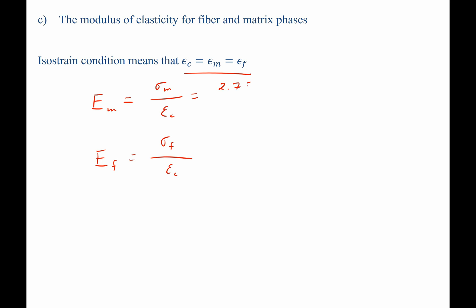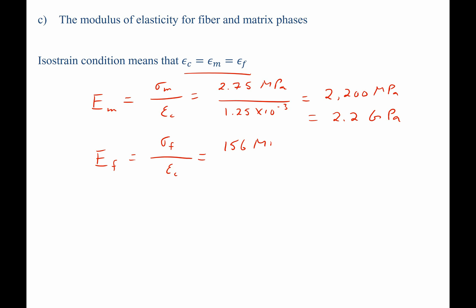Plugging in values: for the matrix, 2.75 MPa divided by 1.25 times 10 to the negative 3 gives a modulus of elasticity of 2,200 megapascals, or 2.2 gigapascals. For the fiber, 156 MPa divided by 1.25 times 10 to the negative 3 gives 124,800 megapascals, or 124.8 gigapascals.